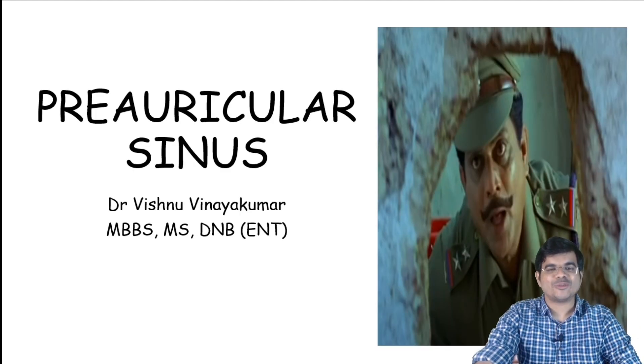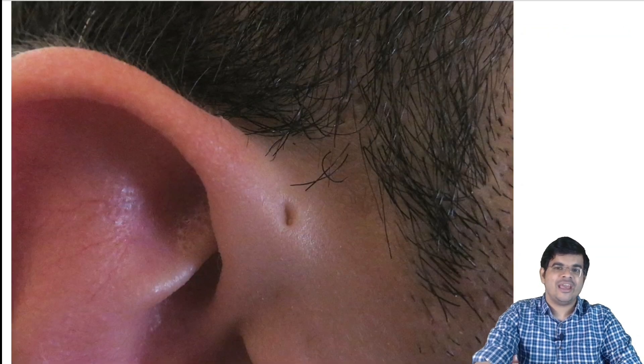Preauricular sinus is a sinus tract lined with squamous epithelium, usually seen in front of the helix of pinna. It is one of the most common congenital anomalies of pinna.